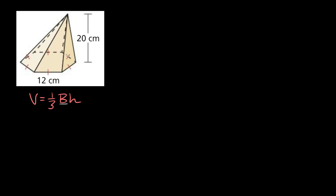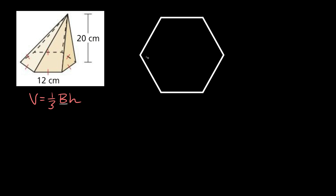So let's find first of all the area of the base — basically the area of this hexagon. Let me bring in a hexagon just so we have a cleaner shape to work with and figure out how to find the area. Each side is 12 centimeters and it's a regular polygon, which means all the sides are the same length. To find the area of any regular polygon you can use this formula: it's equal to one-half times A times N times S, where A is the apothem, N is the number of sides, and S is the length of each side.